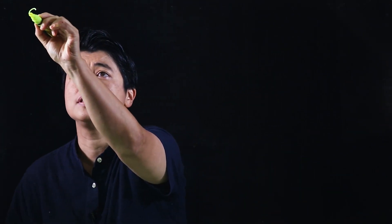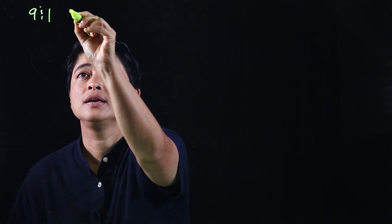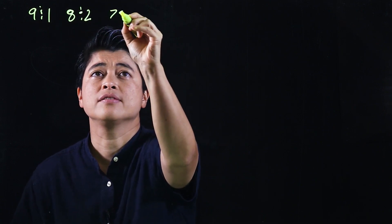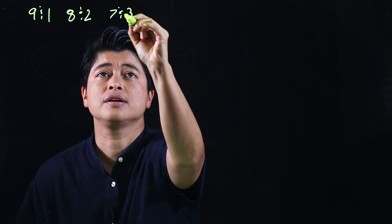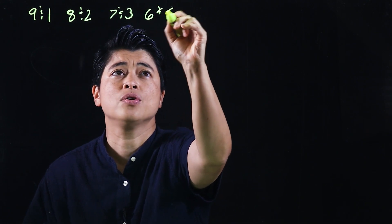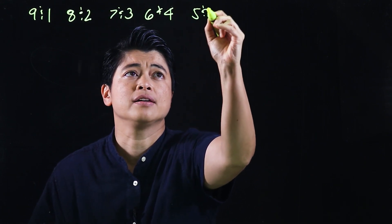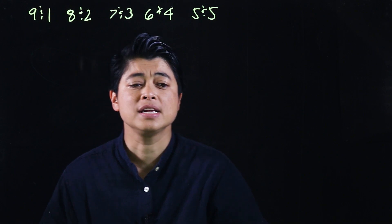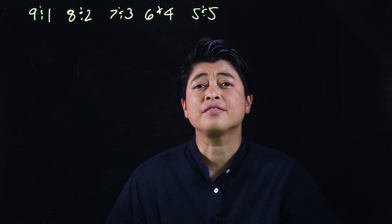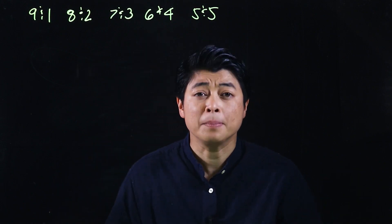We need to remember our pairings: nine and one, eight and two, seven and three, six and four, and five and five. These are very important. The first set of problems deals with zeros, and the second set has no zeros.